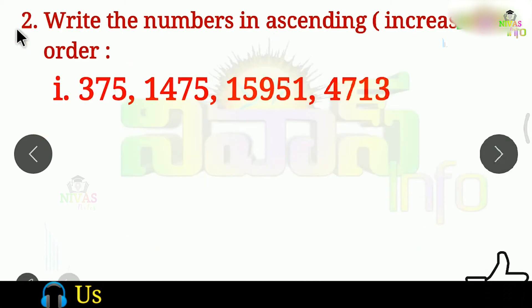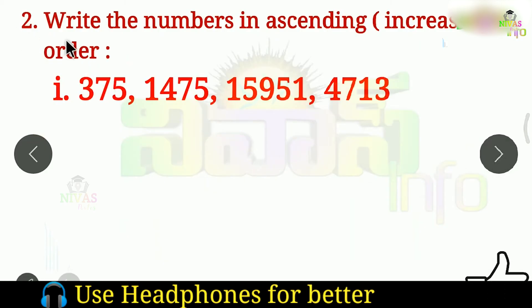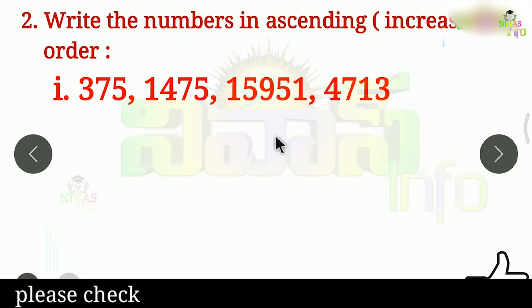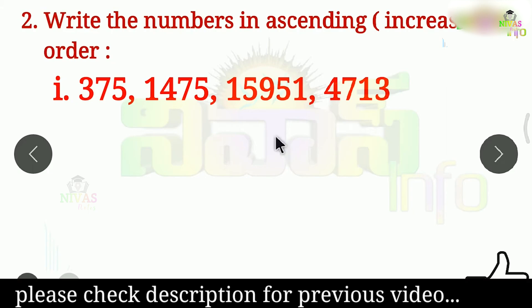The second question is to write the numbers in ascending order. Ascending order means increasing order. First, there is a small number, then there is a big number, then there is a bigger number.